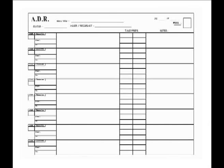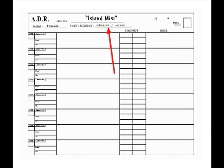This is a traditional ADR form — an organized and structured way to cue the ADR lines of a project. All ADR sheets should have the following information listed in the header: the project title, the name of the ADR supervisor (the person responsible for cueing the ADR lines), and the name of the ADR mixer and the ADR recordist. This is vital information should it become necessary to track down the ADR mixer to answer questions or to solve session issues.